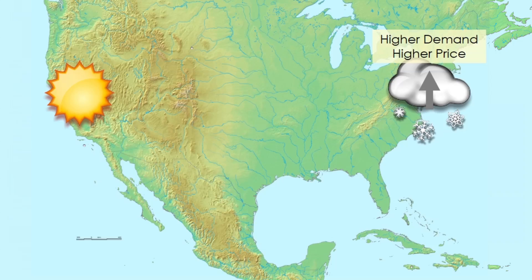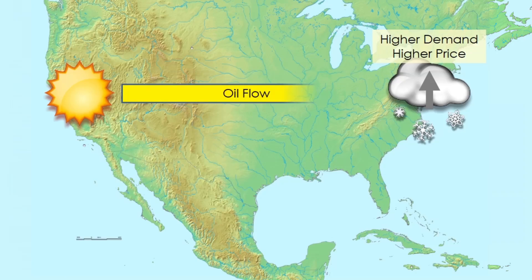Now, what are entrepreneurs going to do? Seeing this signal of a higher price, they're going to be incentivized to take oil from where it has low value — over here on the west coast — and bring it to where the oil has high value on the east coast. So oil will flow from the west to the east, from areas where it has low value, in response to the signal of the higher price, to areas where it has higher value.